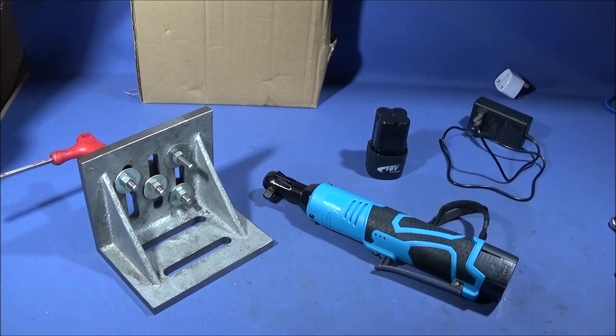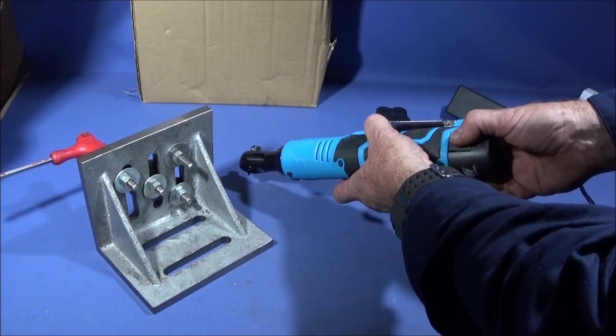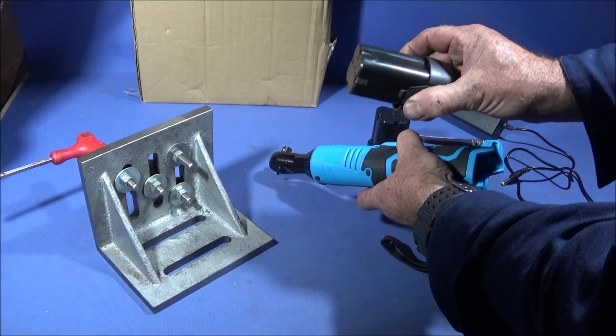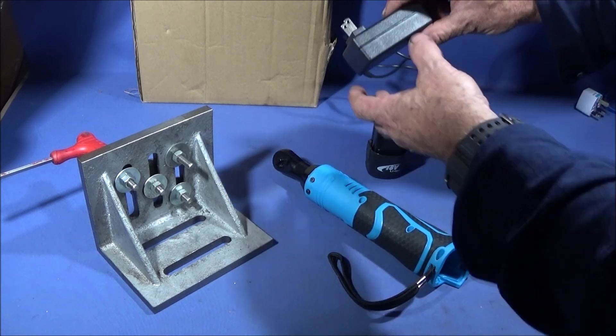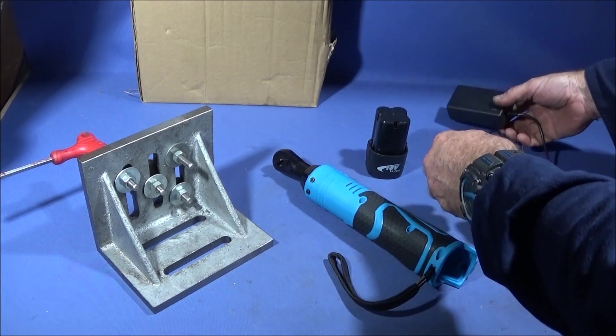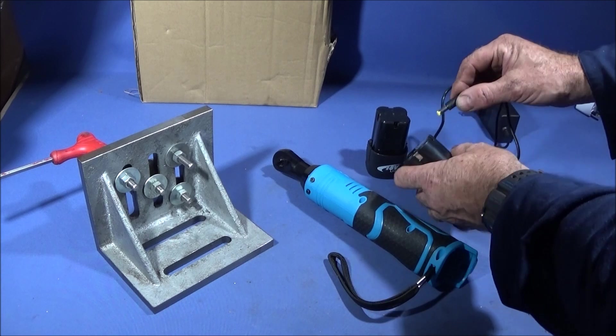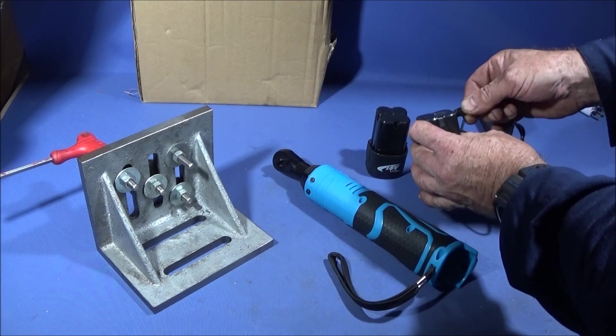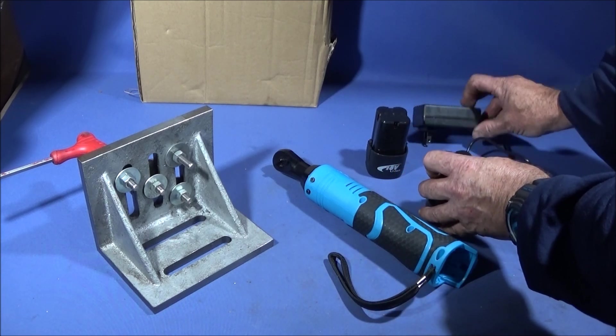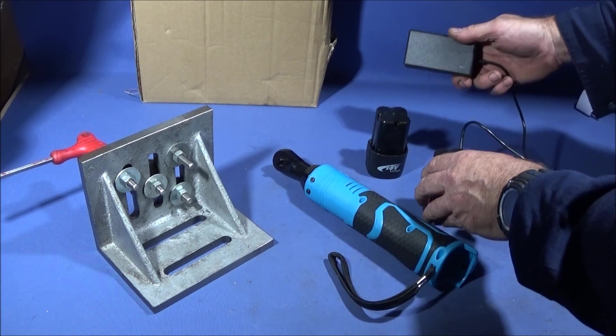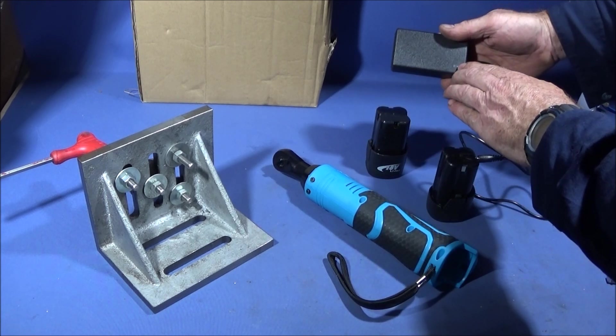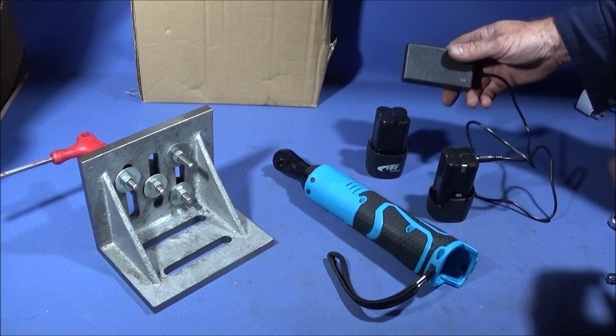The battery simply pulls out the back here, pushing these two tabs in. To charge it you have this adapter which comes with it, and this one simply plugs into the actual battery unit. When it's charging, this one lights up red when it's undercharged, and when it's fully charged it turns green.